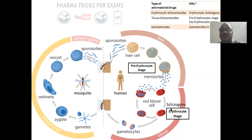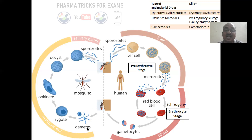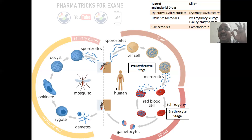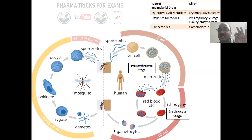In the liver, merozoites are converted into schizonts and then into gametocytes in the erythrocytic stage — the blood. Whenever the mosquito bites again, gametocytes are sucked up along with the blood into the mosquito. These gametocytes convert into gametes, zygote, ookinete, oocyst, and finally sporozoites. Anti-malarial drugs kill only the stages in the human — sporozoites, merozoites, schizonts, and gametocytes — not the mosquito stages.